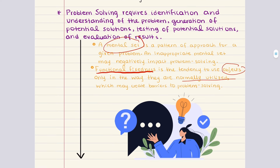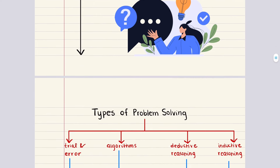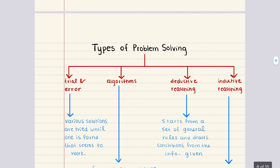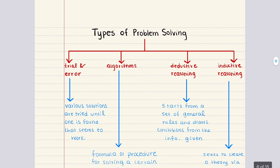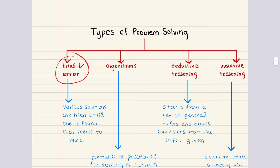There are different types of problem solving in psychology. They include trial and error, algorithms, deductive reasoning, and inductive reasoning.